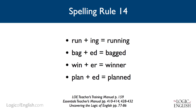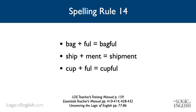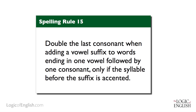If we have a word such as run — it ends in one vowel followed by one consonant — and we're adding the vowel suffix -ing, we double the consonant: running. The same with bag plus -ed: we double the G to make bagged. Or win plus -er: we double the N to make winner. Plan plus -ed: double the N to make planned. Now if we add a consonant suffix — bag plus -ful, we will not double the G; ship plus -ment, we will not double the P; cup plus -ful, we will not double the P. The rule: double the last consonant when adding a vowel suffix to words ending in one vowel followed by one consonant.